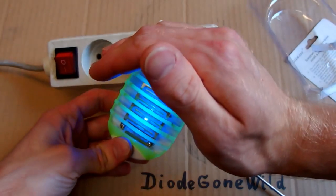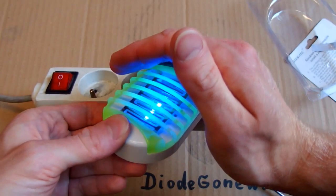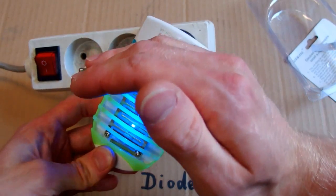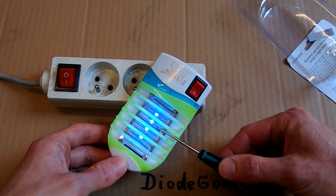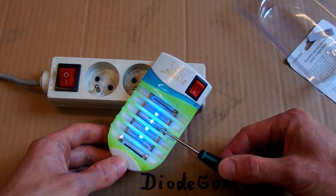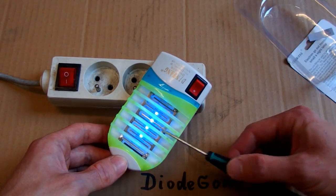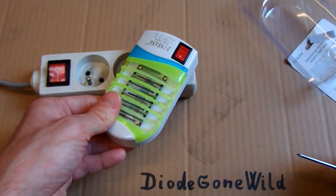But the LEDs are blue. They are not ultraviolet so I'm not sure this is going to attract mosquitoes or flies. But some high voltage is definitely there. And it seems to have no discharging resistor.